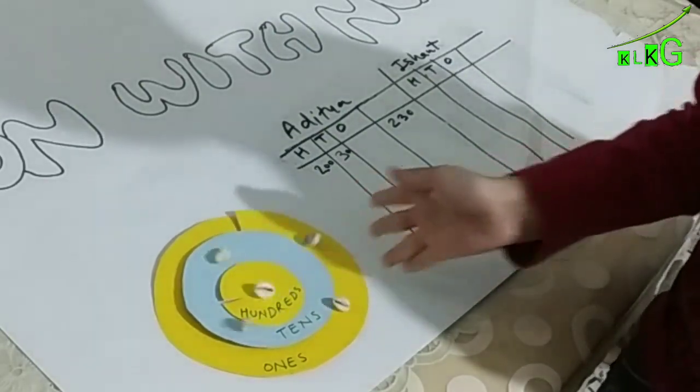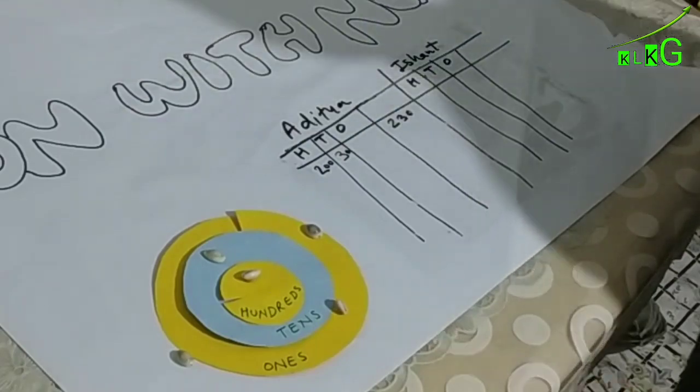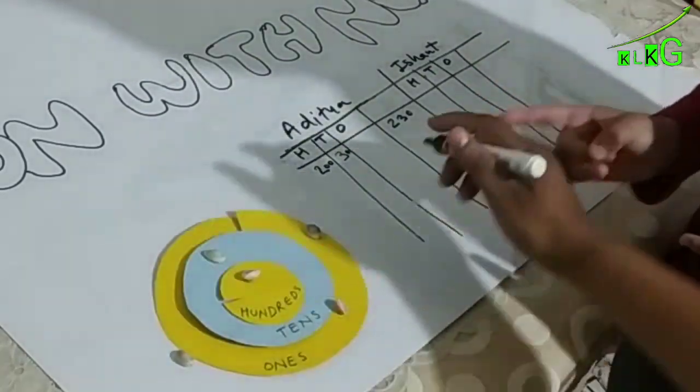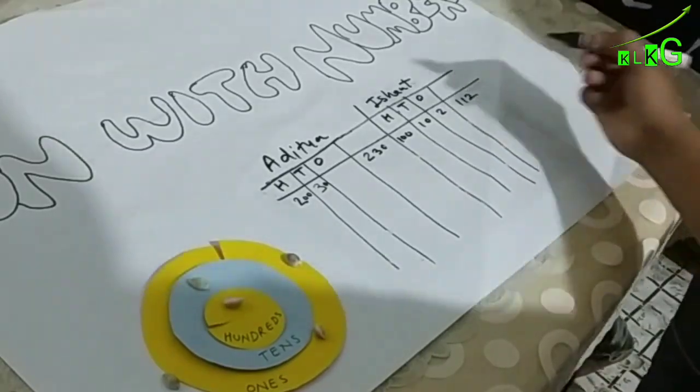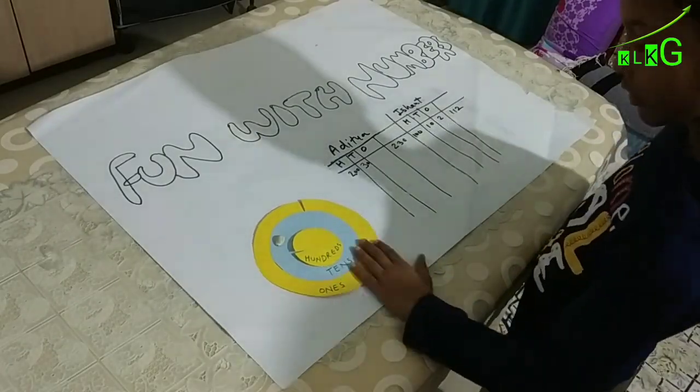Now I will throw Kodi on this circle. Now you can see I got one hundreds, one tens, and two ones. It means one hundred and twelve. This way we can continue to play.